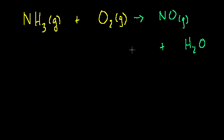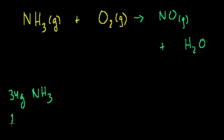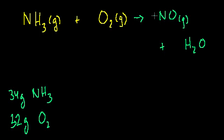We're told that we're given 34 grams of ammonia and 32 grams of molecular oxygen, O2. The question is: how many grams of nitrogen monoxide, or nitric oxide, NO, are going to be produced?